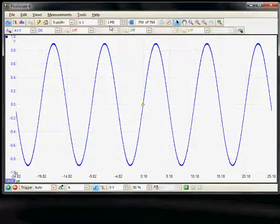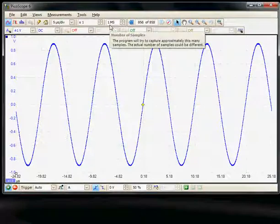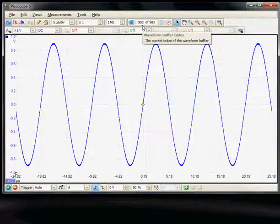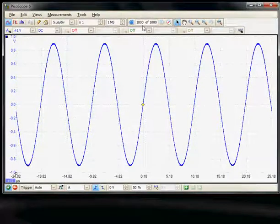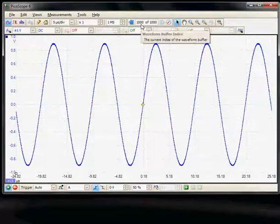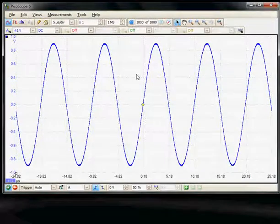At the moment we have selected each record to be one million samples, and here we can select the number of buffers for the data—it can be hundreds of buffers. In this particular case we've defined a thousand buffers and we've acquired a thousand buffers of a million samples.